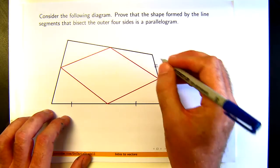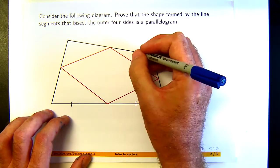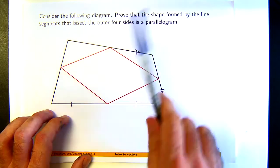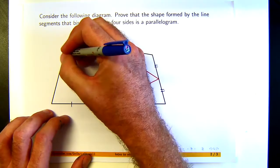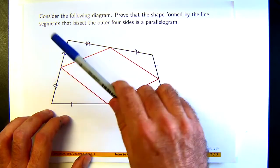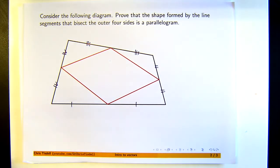This length here is equal to this length here. This length here is equal to this length here. And this length here is equal to this length here. We're asked to prove that the shape formed by the line segments in red that bisect the outer four sides is a parallelogram. So we want to prove that red shape is a parallelogram.